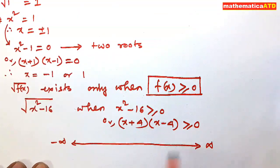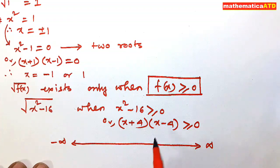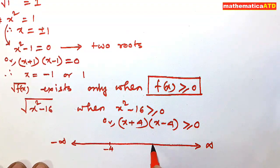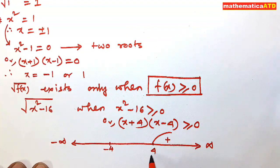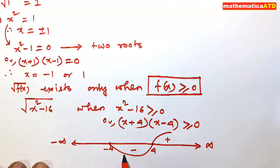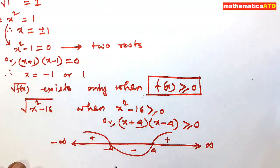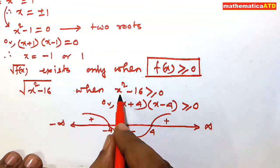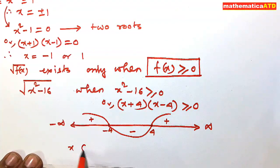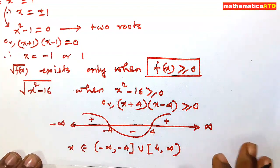Using the wavy curve method — links to that topic are in the description — the critical points are minus 4 and plus 4. On the extreme right this is positive, and for the factor x minus 4 with degree one this is negative alternating. The solution for x squared minus 16 greater than or equal to zero is x belongs to minus infinity to minus 4, closed, union 4 to infinity.